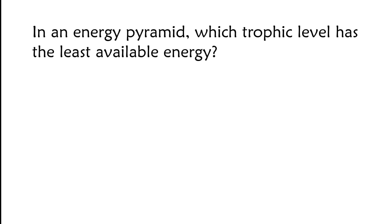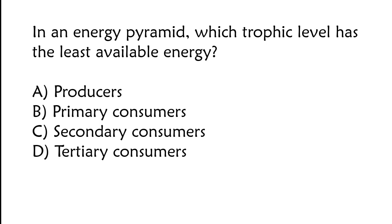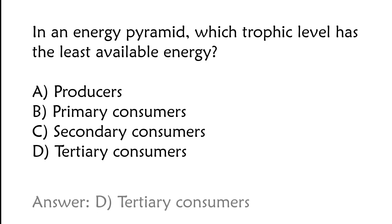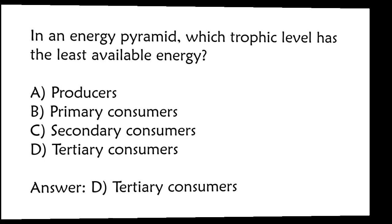In an energy pyramid, which trophic level has the least available energy? A) Producers, B) primary consumers, C) secondary consumers, D) tertiary consumers. The correct answer is option D, tertiary consumers.